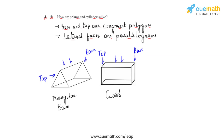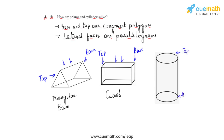Now let us move on and see what happens in the case of a cylinder. As we observe this cylinder, if we state that this is the top and this is the base, we are going to observe the same property as in the case of a prism — that the top and the base represent congruent shapes, in this case a circle. Also, if we observe the lateral part, we see that it represents a parallelogram if we view the cylinder from its side. So this is the similarity between a cylinder and a prism.